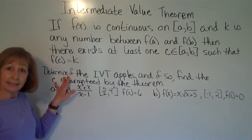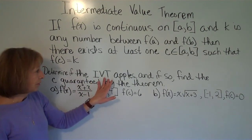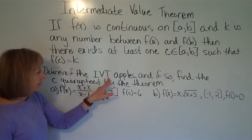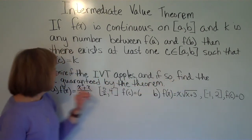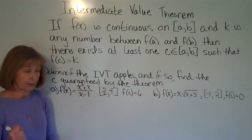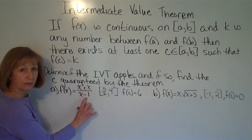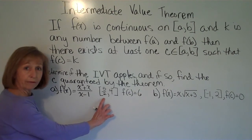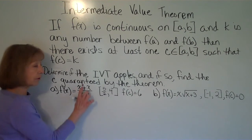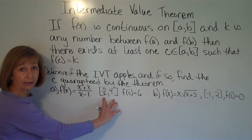In the example, it says: determine if the Intermediate Value Theorem (IVT) applies, and if so, find the c guaranteed by the theorem. The first one is f(x) = (x² + x) / (x − 1) on the closed interval from 5/2 to 4, and it gives that f(c) = 6. First, I need to make sure this function is continuous on that interval.